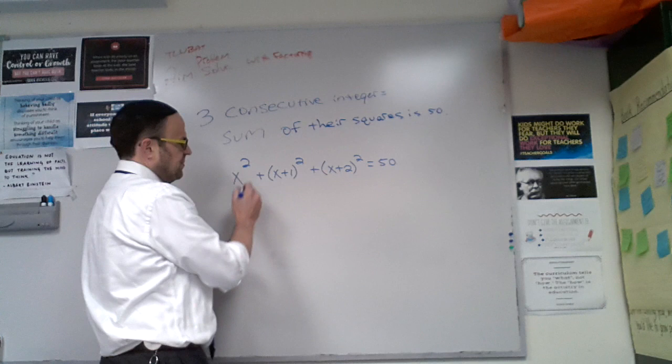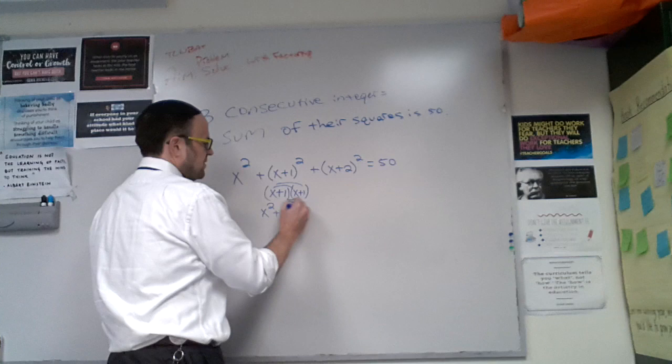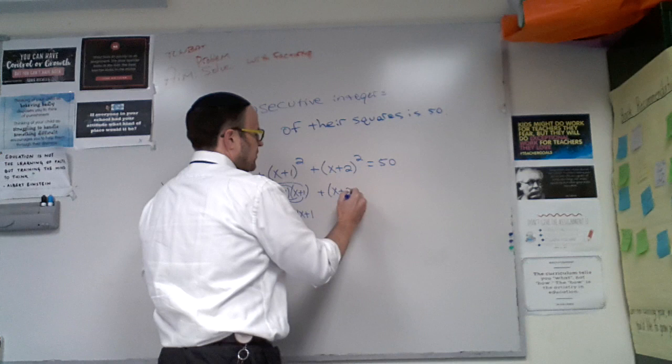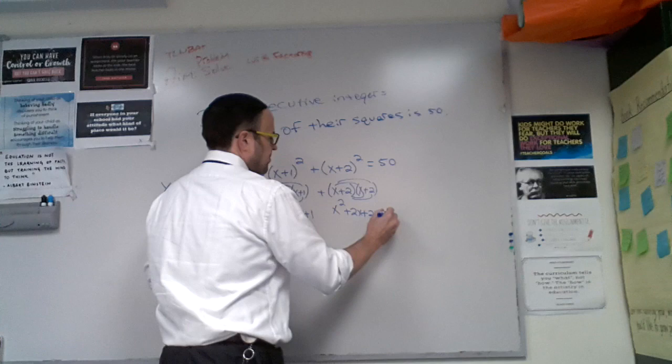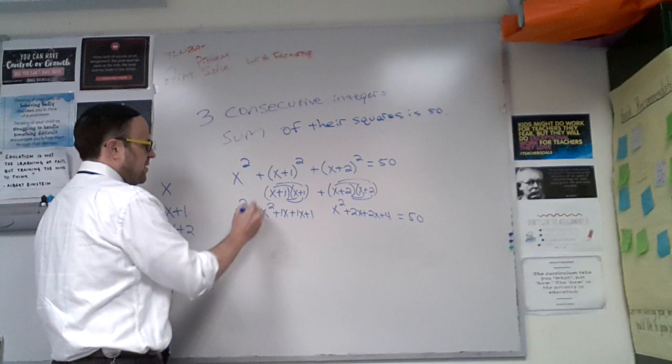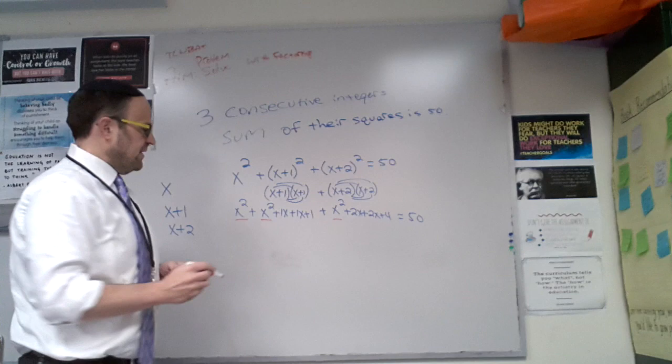Okay, this one is already as simple as it can get for right now. This one, let's make sure that we expand it out. X² + 1x + 1x + another 1. Let's do the same thing here. Expand it out. X² + 2x + 2x + 4 = 50. Bring down that first x², bring down the plus sign. Now let's indicate our like terms.